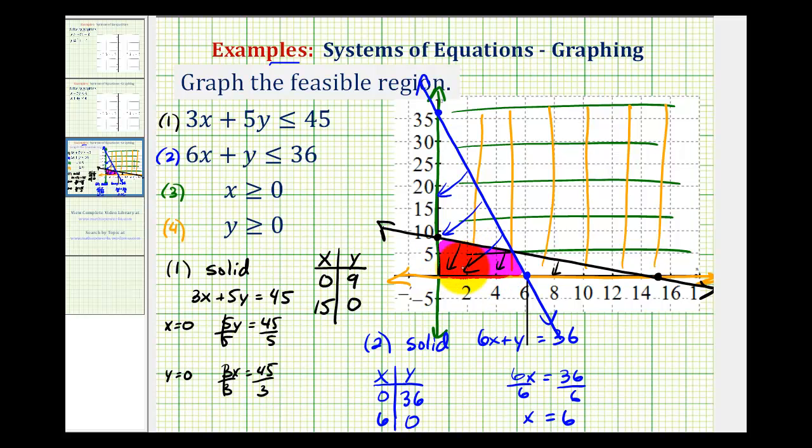Which means all the ordered pairs in this region would satisfy all four of these inequalities. Okay, I hope you found this helpful.